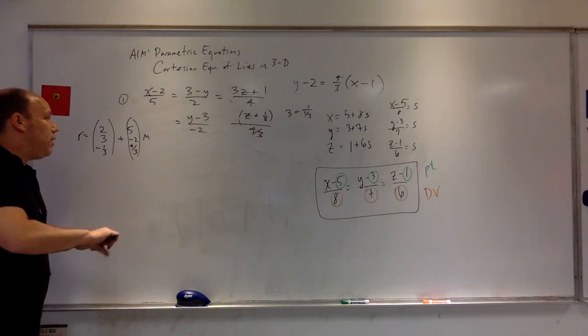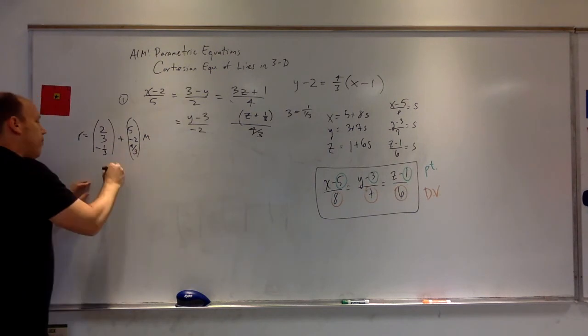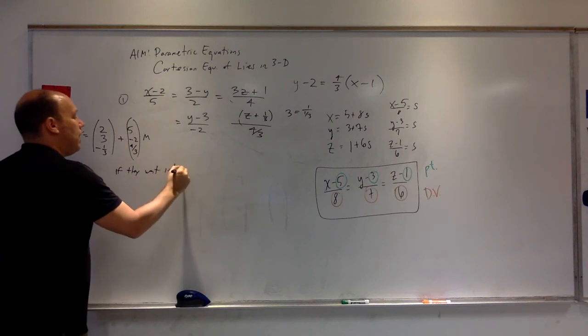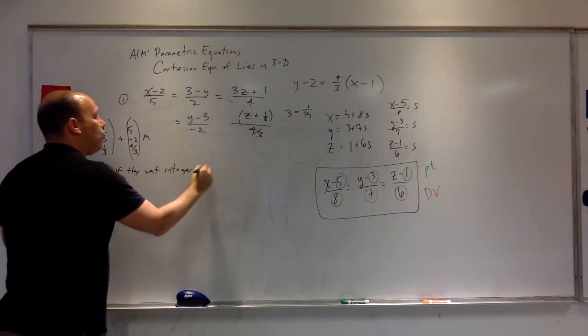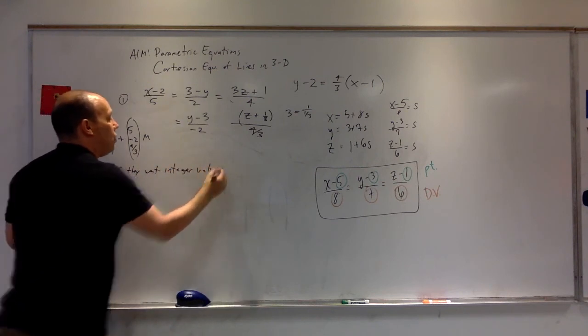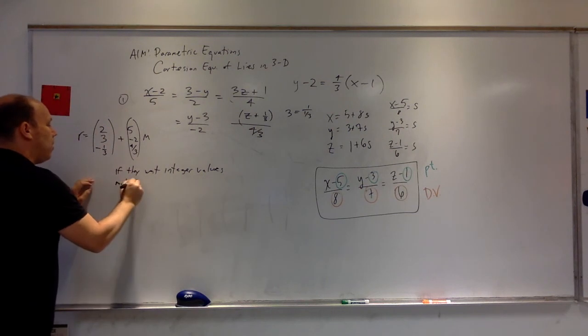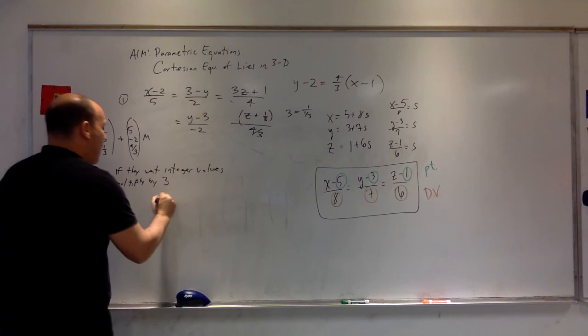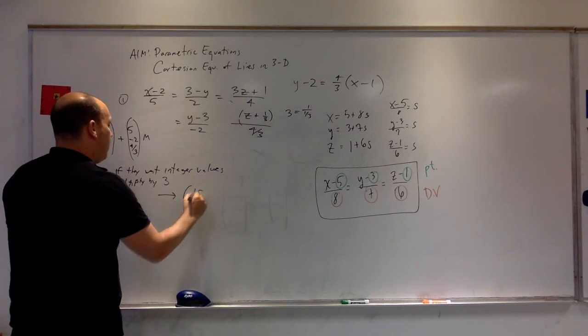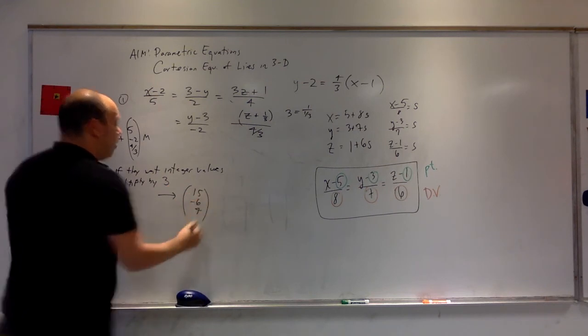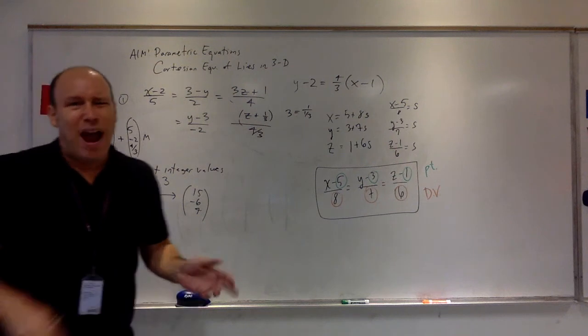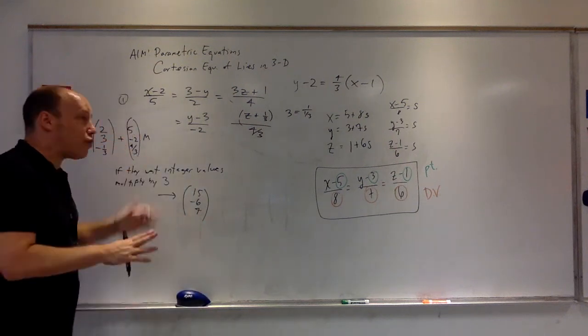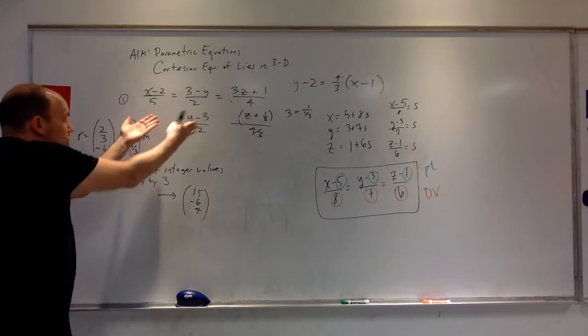Now, I think an exercise in the book is that they ask for integer numbers. Well, we know, how do we get rid of that 3? If they want integer values, you can just multiply by 3, so it becomes 15, negative 6, 4. Why do they ask for that? Because fractions suck sometimes, and it's still parallel and still in the same direction. So we're good to go.